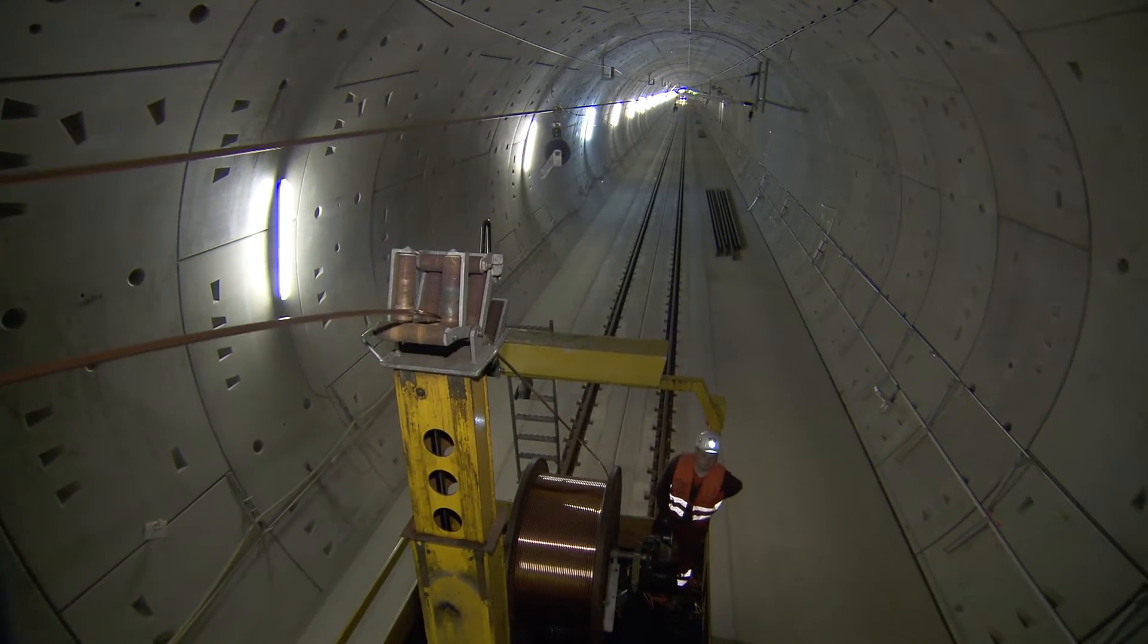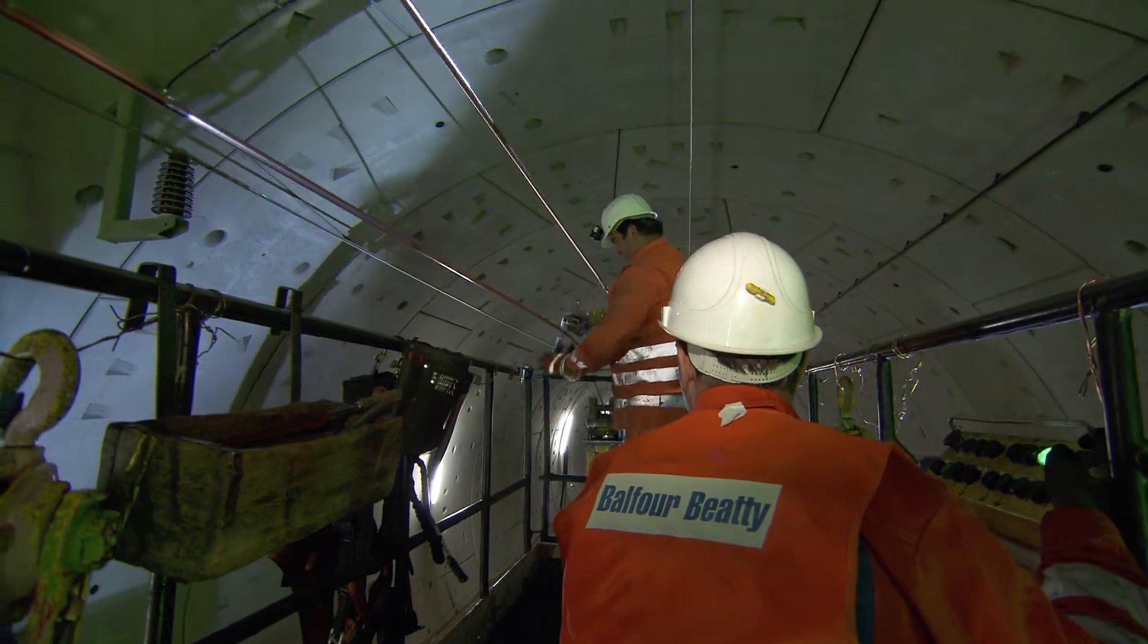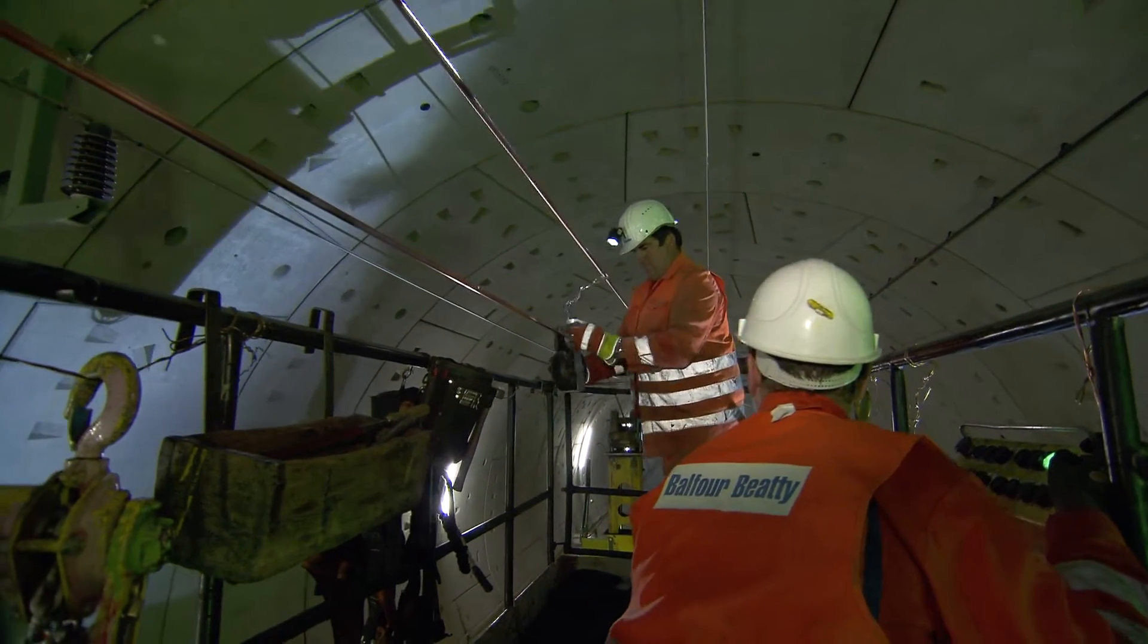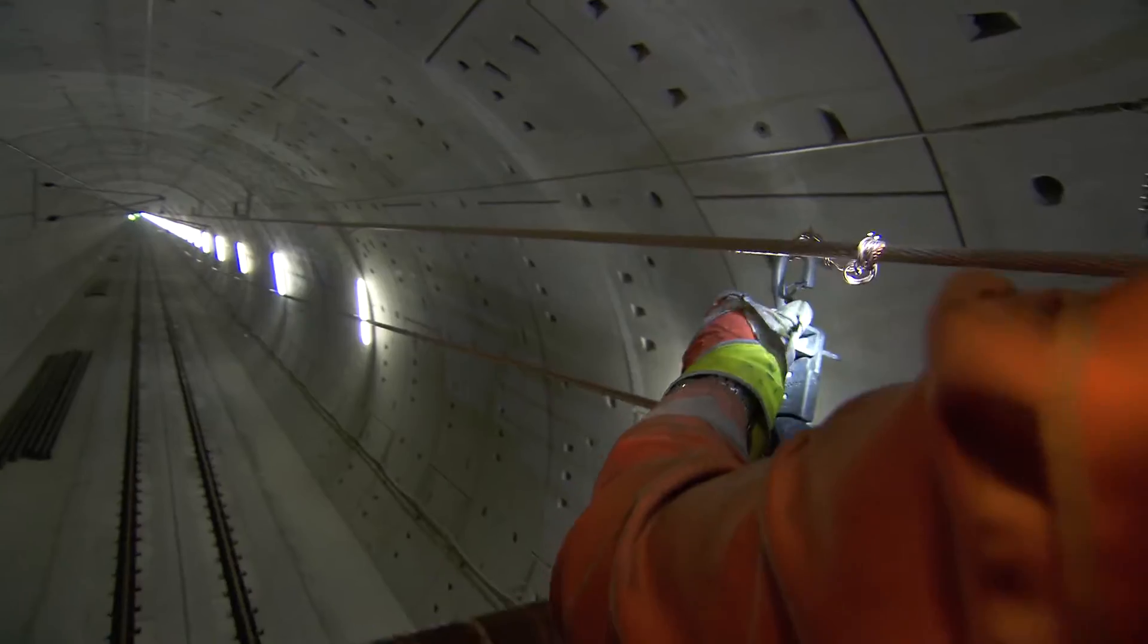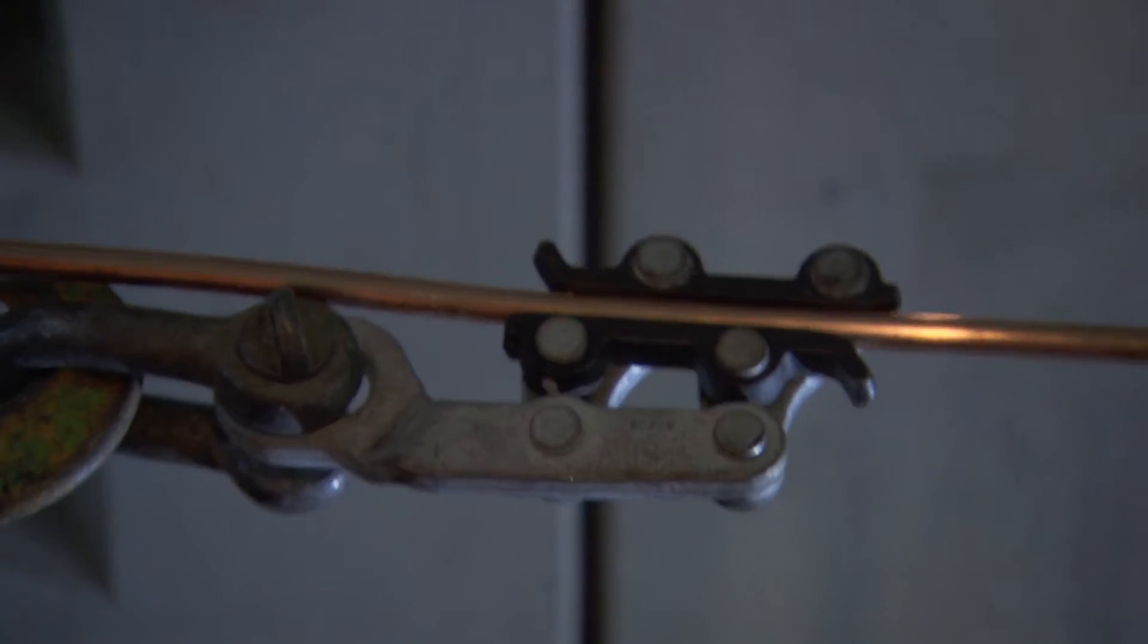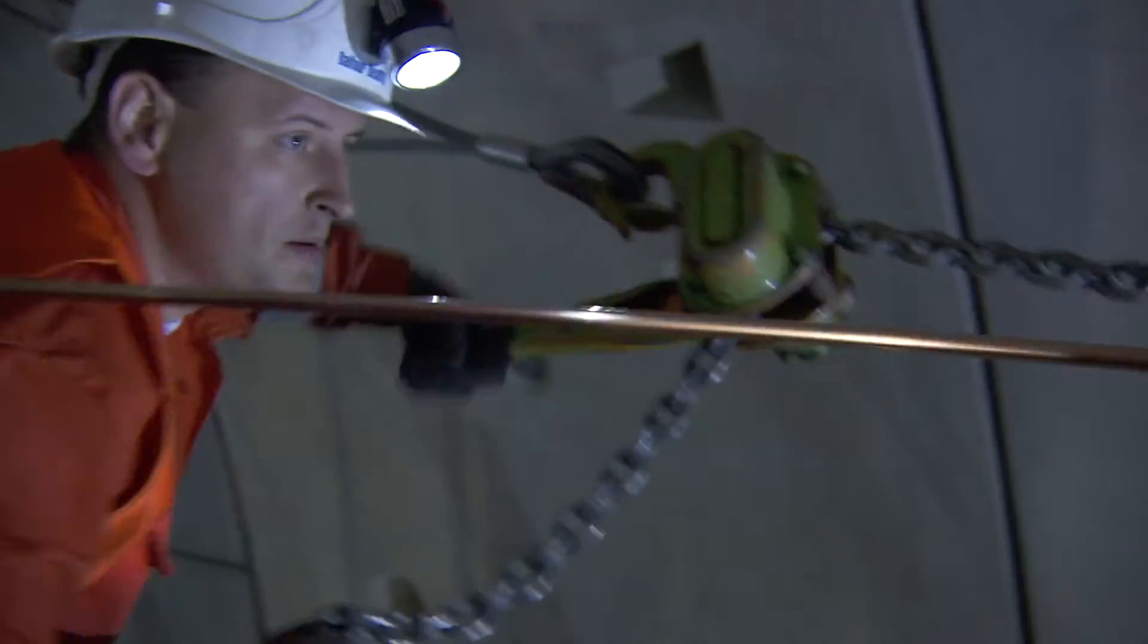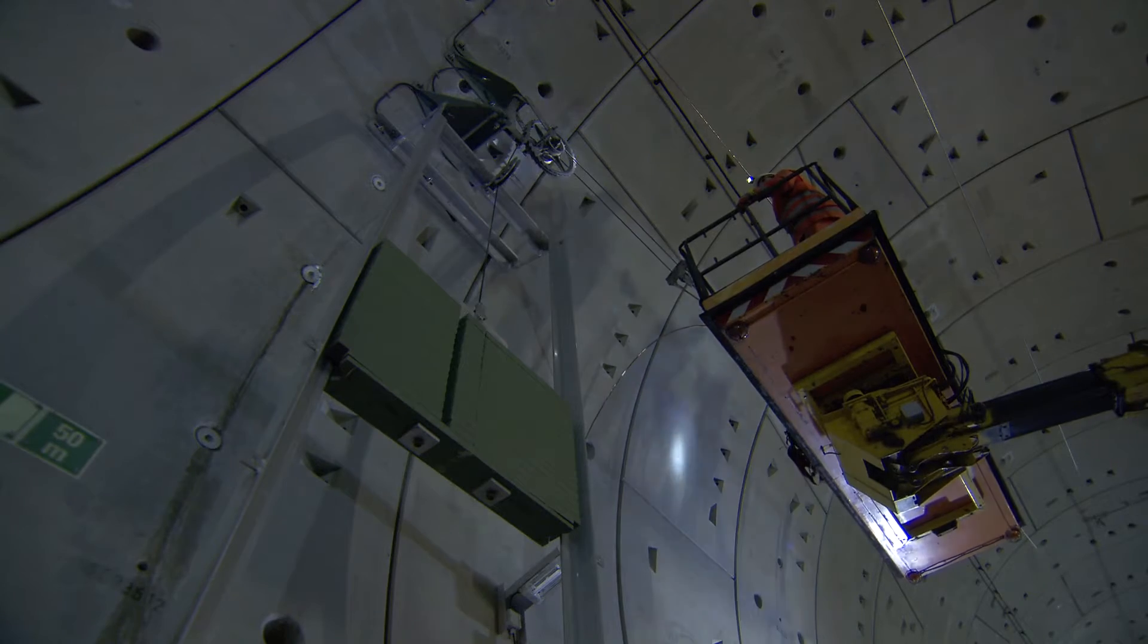Every move has to be just right. After all, the catenary wire and the contact wire weigh 1,500 kg per km. But being suspended from the catenary wire alone is not enough to hold the contact wire precisely in position. Because during operation it changes its position through pantograph contact and temperature fluctuations. This is why the contact wire is kept tensioned at 27 kN using the wheel tensioner.